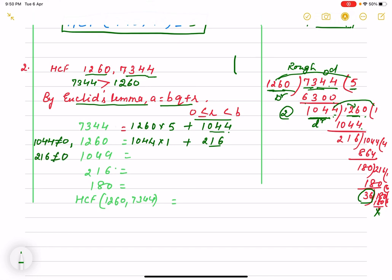Third step. So, now again you check third step. It is 216 into 4 plus 180. So, 216 into 4 plus 180. Written. Again 180 is not equal to 0. So, 216 is 180 into 1 plus 36. 36 is not equal to 0.